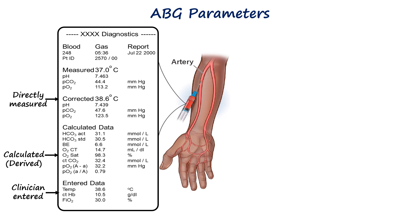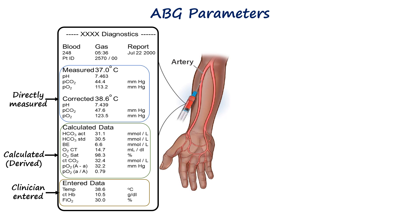Clinicians must enter certain information like FiO2 and patient temperature because the analyzer cannot determine these factors on its own. The machine directly measures core blood gas values including pH, PaCO2, and PaO2 using specialized electrodes. Other important parameters like bicarbonate, base excess, oxygen saturation, and anion gap are calculated by the analyzer using formulas based on the measured values.